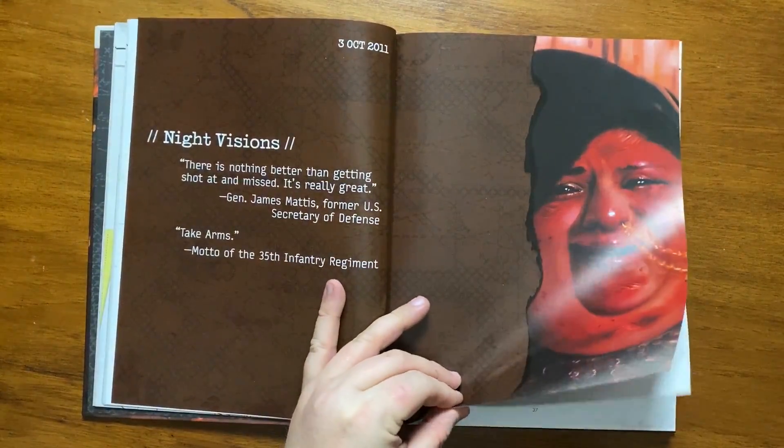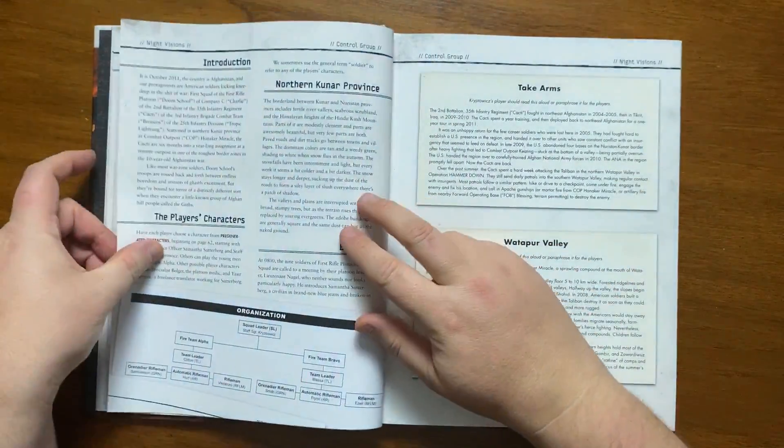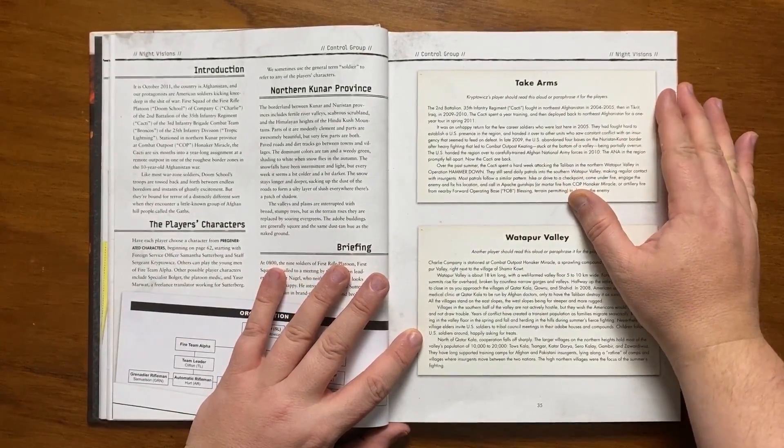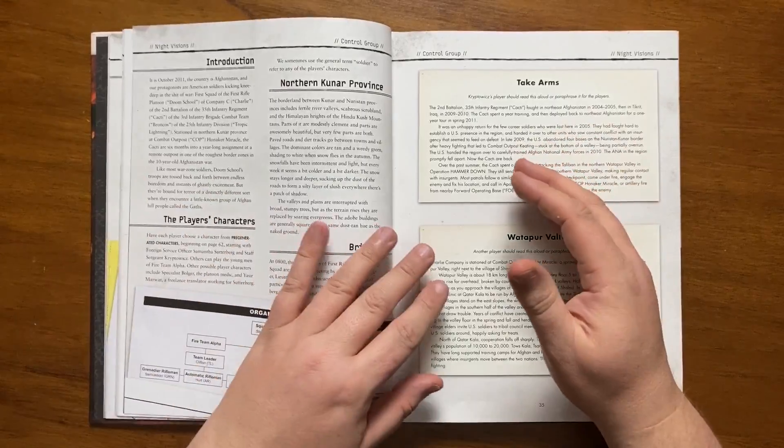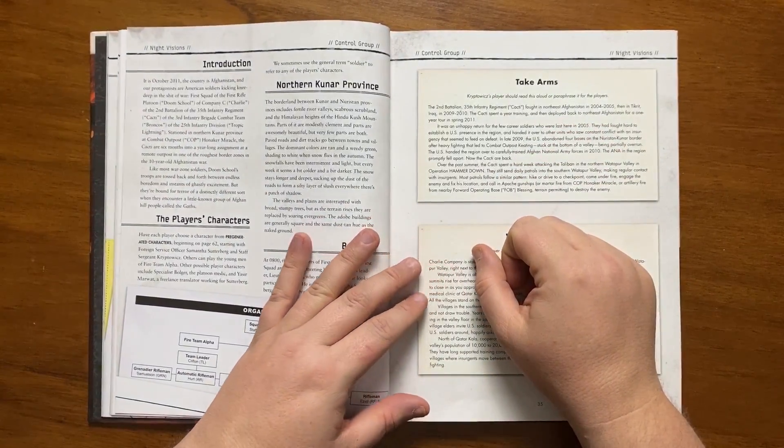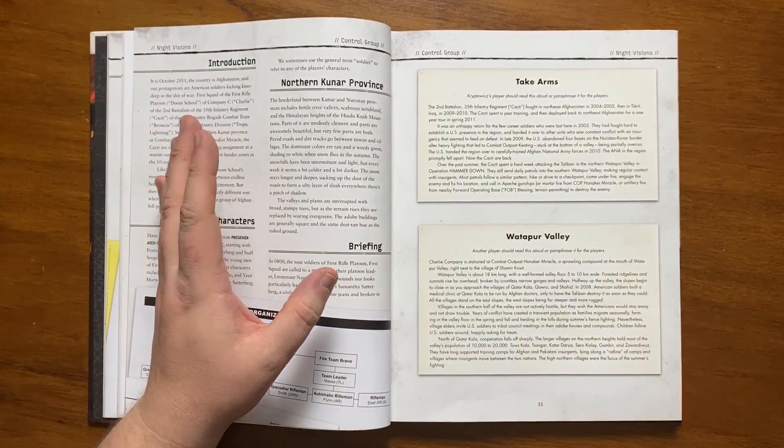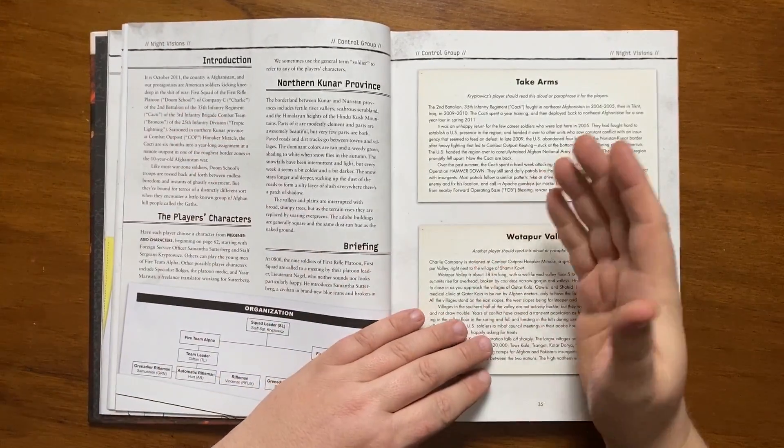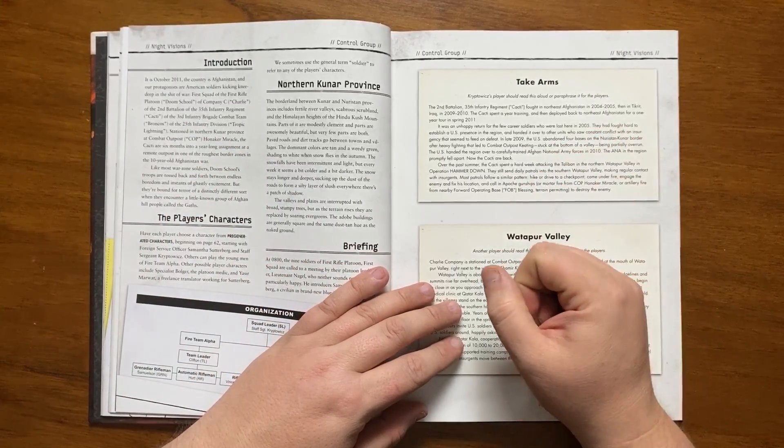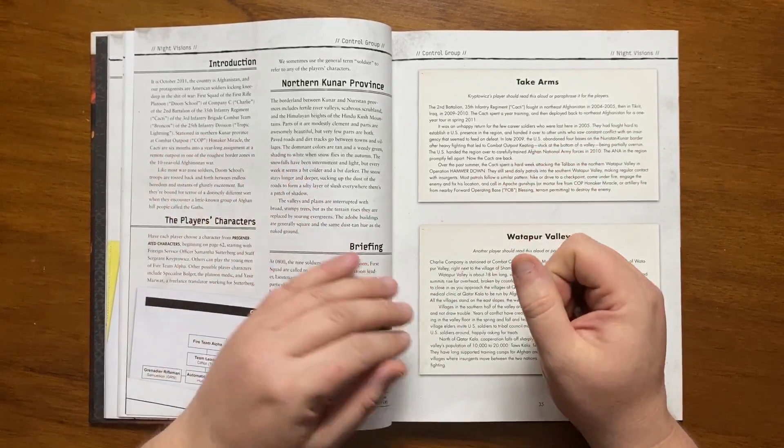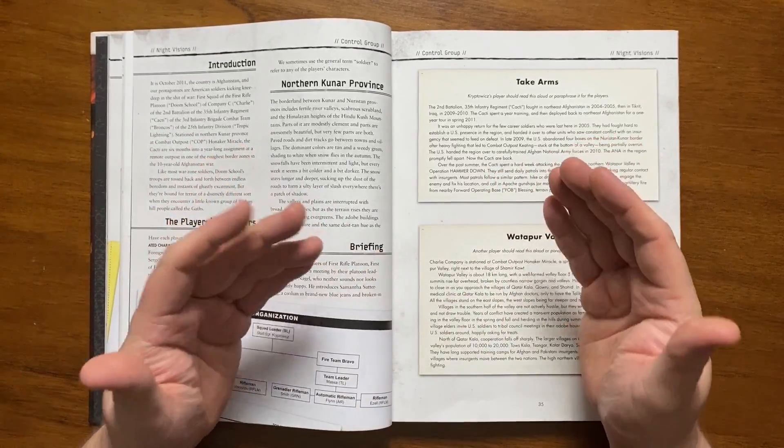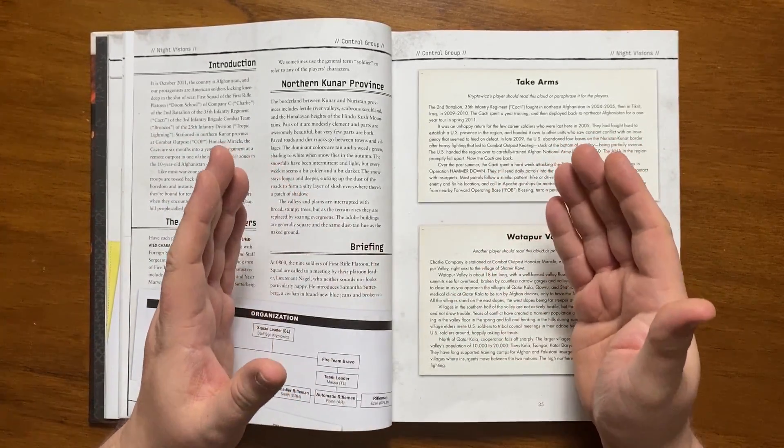The scenario begins in war-torn Afghanistan in October 2011. The group of soldiers who are part of the 1st Squad of the 1st Rifle Platoon of Charlie Company of the 2nd Battalion of the 35th Infantry of the 3rd Infantry Brigade Combat Team of the 25th Infantry Division. They're stationed in the Northern Kunar province at Combat Outpost Hanukkah Miracle. The regiment is known as the Cacti and are halfway through a 12 month tour. It is one of the roughest zones in the war. Their tour so far has been a mixture of boredom and terror.